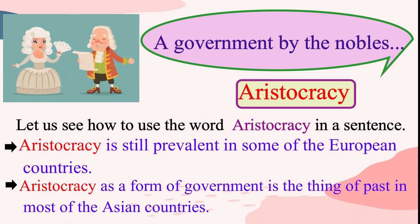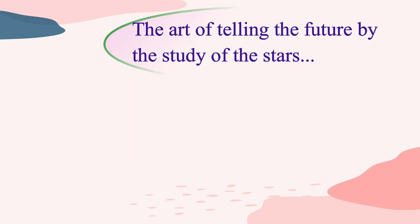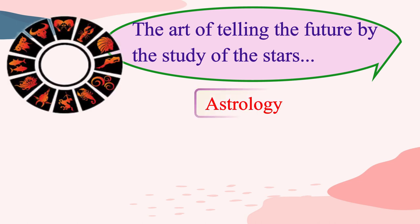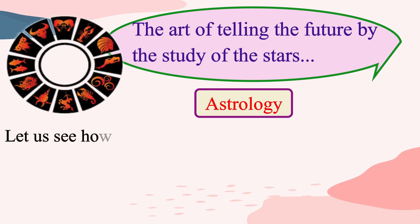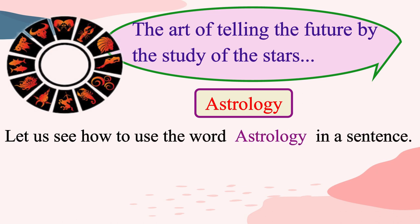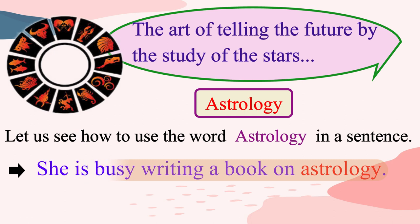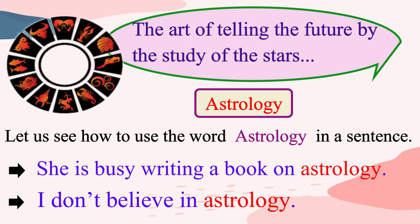Let us see the next group of words. The art of telling the future by the study of the stars, or we can simply say astrology. Astrology is the ancient practice of studying the movements and positions of the sun, moon, planets, and stars in the belief that they affect human lives. She is busy writing a book on astrology. I don't believe in astrology.